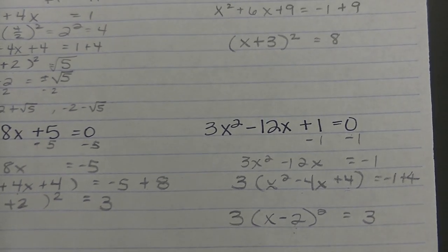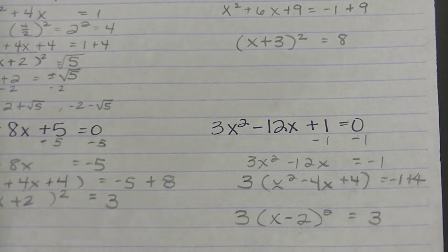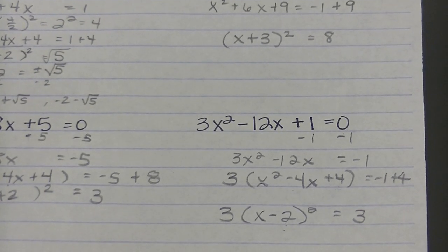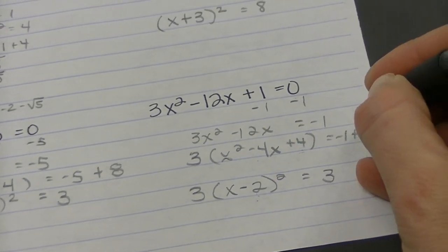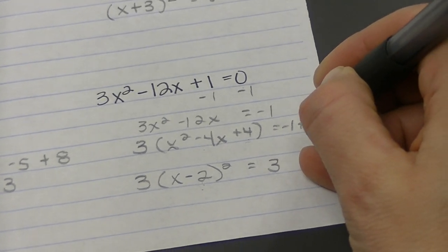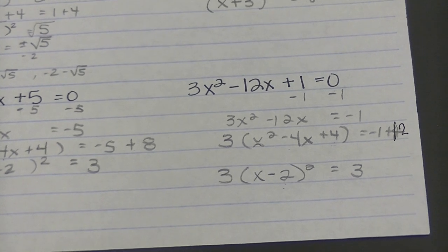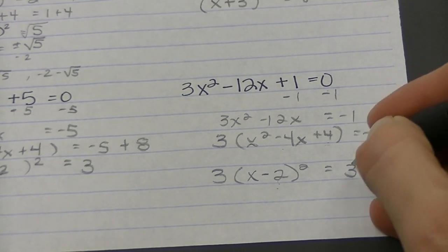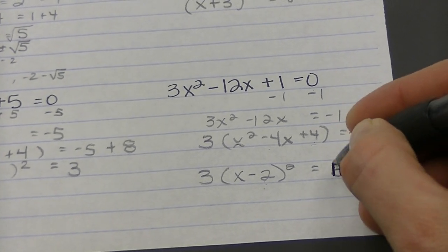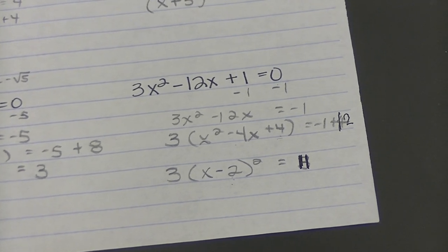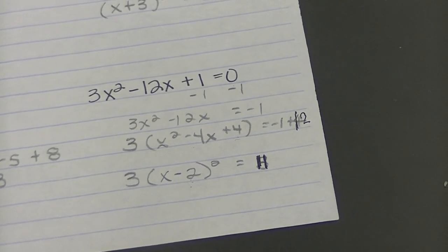So instead of adding 4, I should have added 12. Let's see if I can fix that. This should be 12. So I get negative 1 plus 12, which is 11. Now I can divide by that 3 and take the square root to both sides in order to solve.